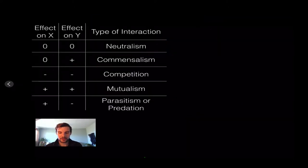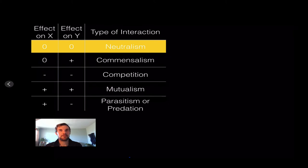So this table will explain the positive and negative effects that each organism has on the other. If it says effect on X, this is going to be one organism and Y is going to be a different organism. If it's a zero, that means there's no effect on the organism. If it's a plus, a positive effect. Minus means a detrimental or negative effect on the organism. So the first one, neutralism, that means that both organisms are unaffected. So their presence together, they will not interact positively or negatively with each other.